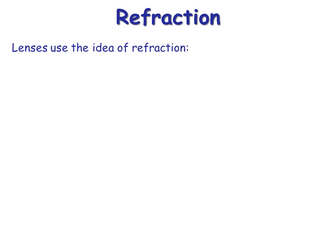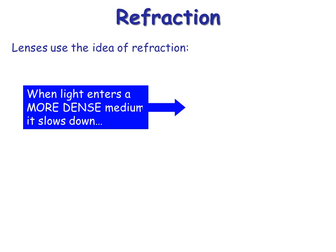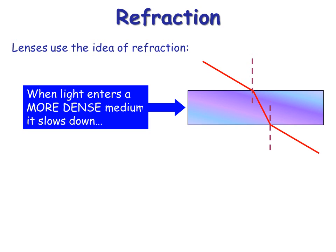Refraction is where light changes direction. The reason it changes direction is it will slow down or speed up. So in the case of a glass block, if light goes through air into glass, it will actually slow down. And this slowing down makes the light bend towards the normal. As it emerges from the glass into the air, it will bend away from the normal. And this is called refraction.